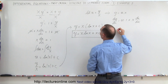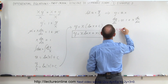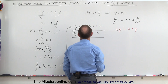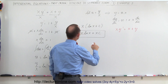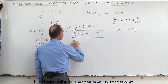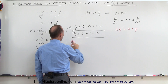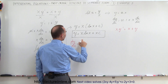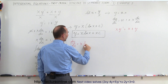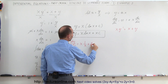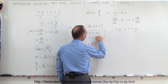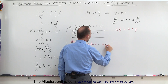The original equation was x times y prime equals x plus y. So we need to find y prime to plug it in. Since y equals x times the natural log of x plus x times c, using the product rule: dy/dx equals x times 1/x plus the natural log of x times 1, plus the derivative of x times c, which gives plus c.